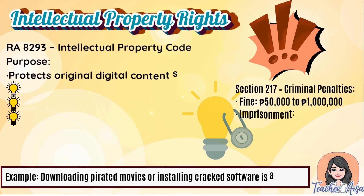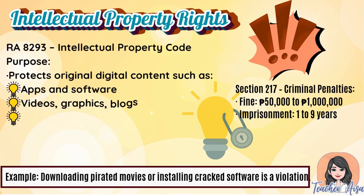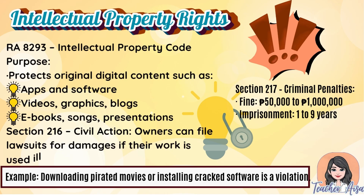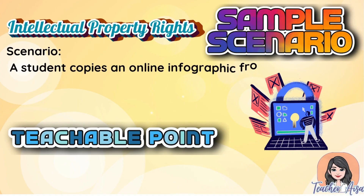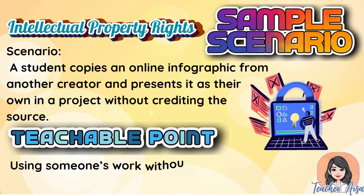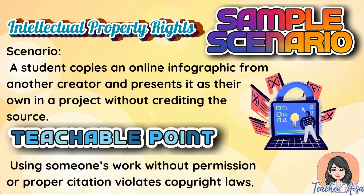RA 8293, the Intellectual Property Code: its purpose is to protect original digital content such as apps, software, videos, graphics, blogs, ebooks, songs, and presentations. Under Section 216, Civil Action, owners can file lawsuits for damages if their work is used illegally. Under Section 217, Criminal Penalties, fines range from 50,000 to 1 million pesos and imprisonment from 1 to 9 years. Example: downloading pirated movies or installing cracked software is a violation. Sample scenario: a student copies an online infographic from another creator and presents it as their own without crediting the source. Teachable point: using someone's work without permission or proper citation violates copyright laws.